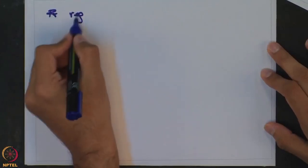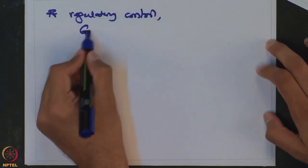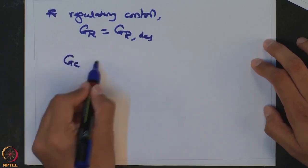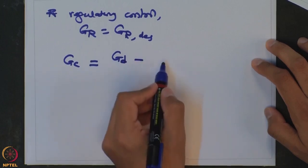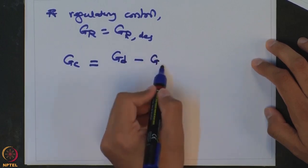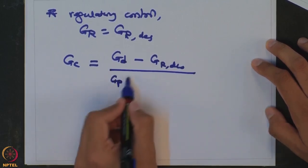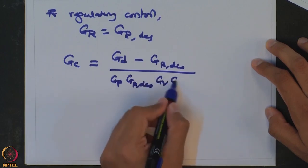Similarly, for the regulatory problem, it can be derived that if Gr_desired is the desired response, then the corresponding controller Gc comes out to be (Gd minus Gr_desired) over (Gp · Gr_desired · Gv · Gm).